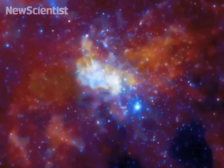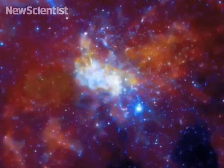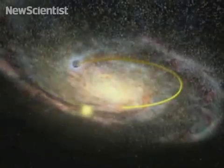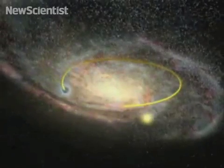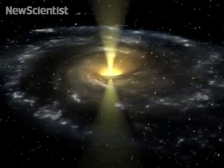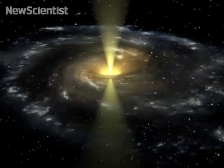Scientists are unsure how supermassive black holes form at the center of galaxies, including the Milky Way. One theory is that they start out as stellar mass black holes and grow over time. They consume nearby stars and gas, which are plentiful at galactic centers.